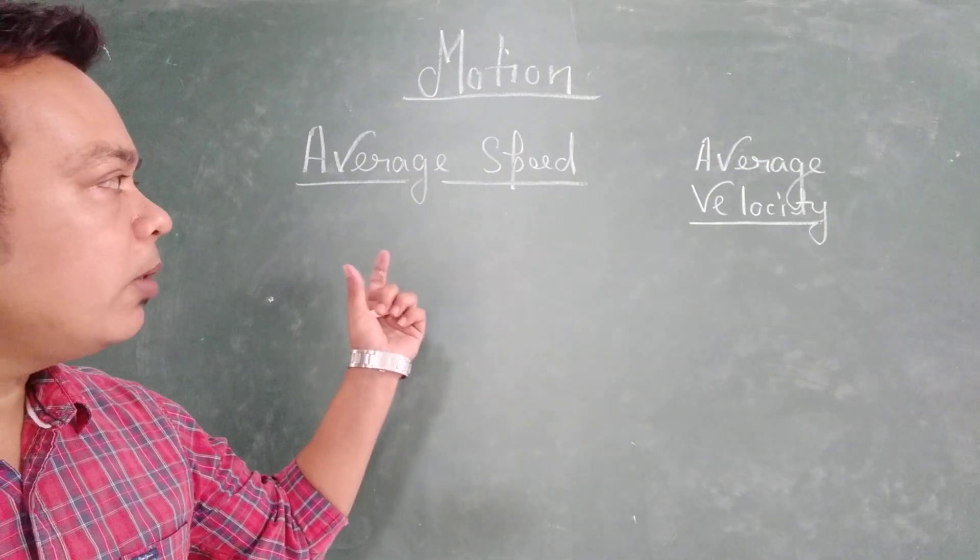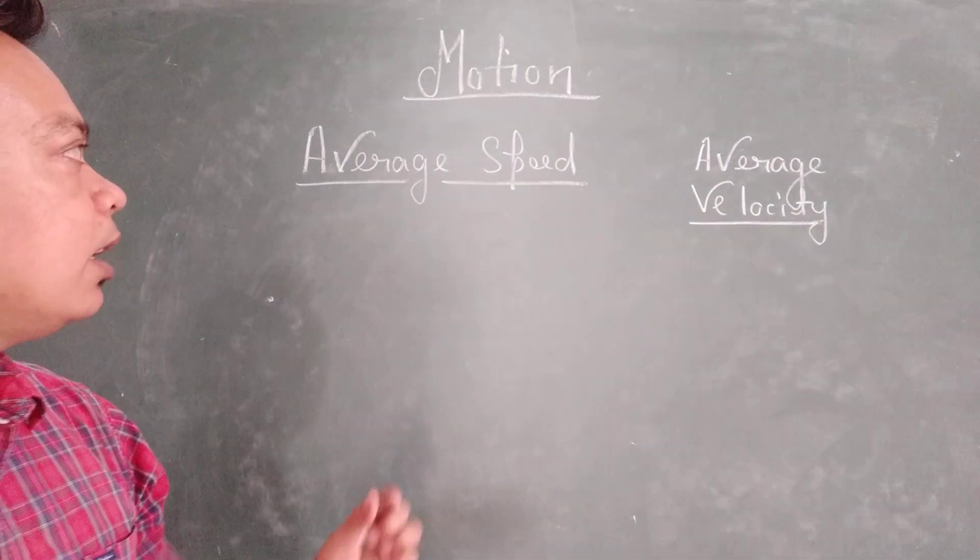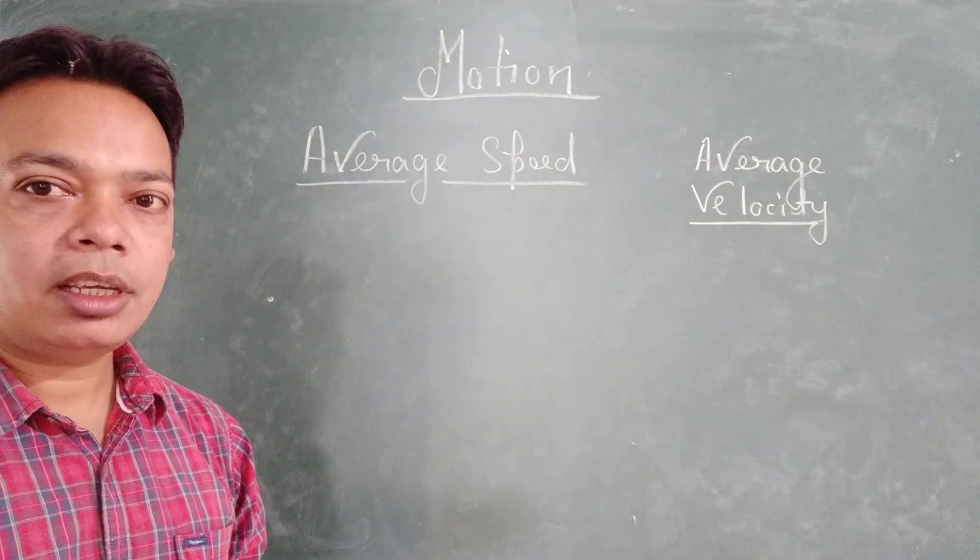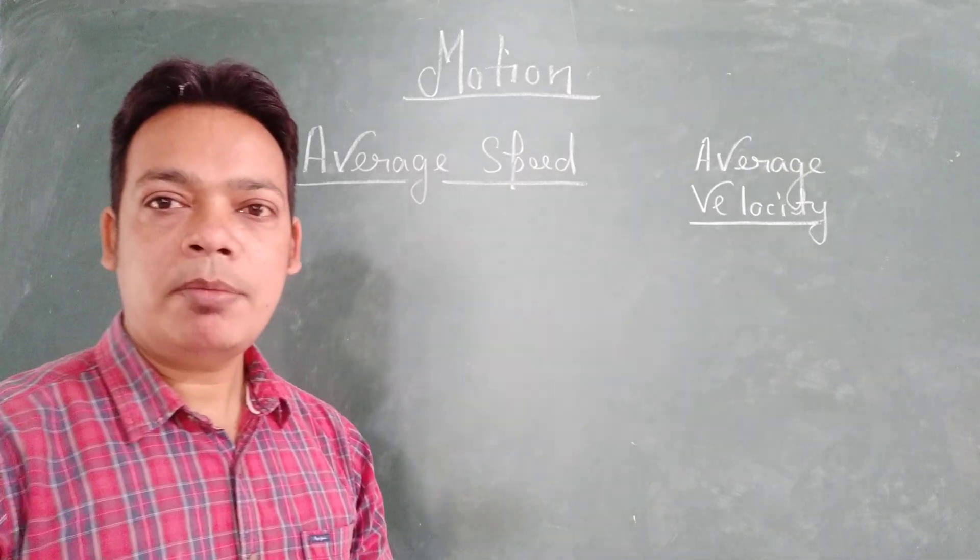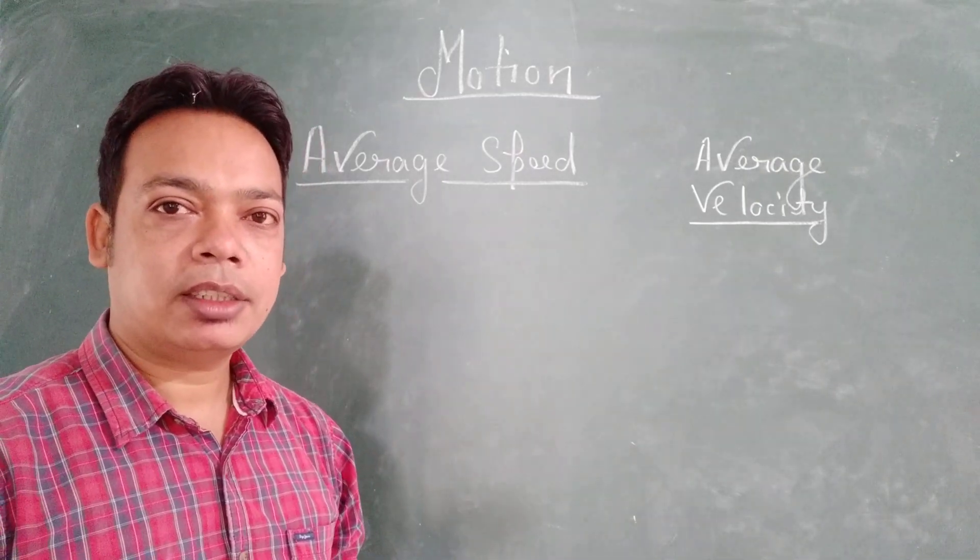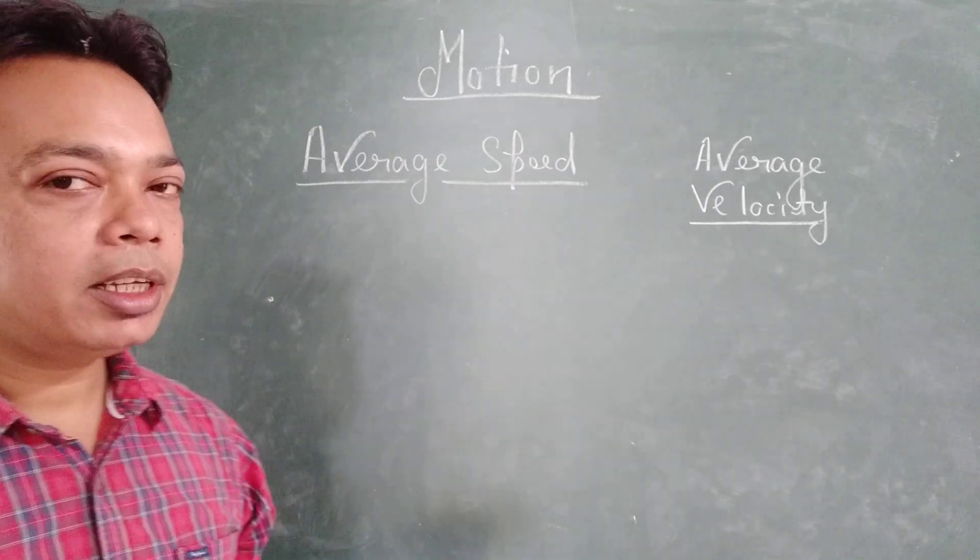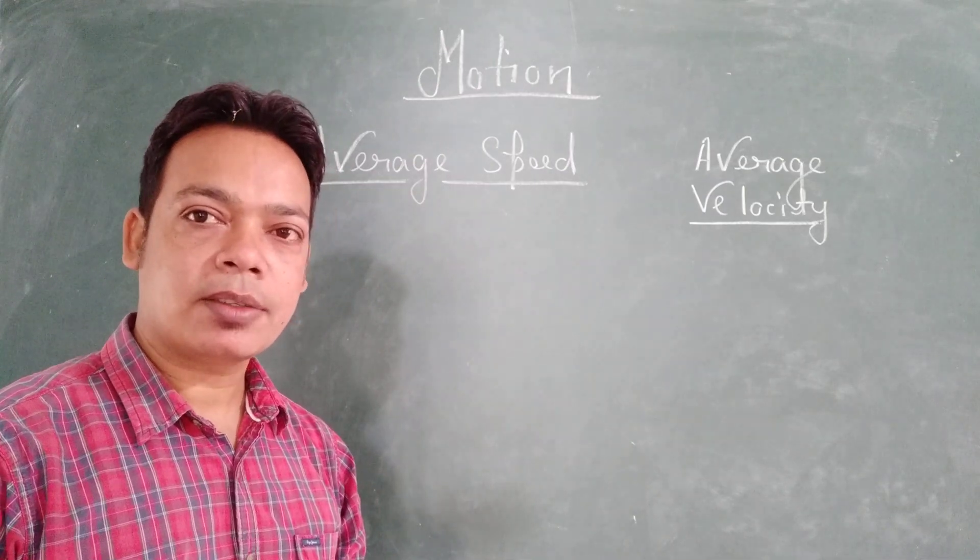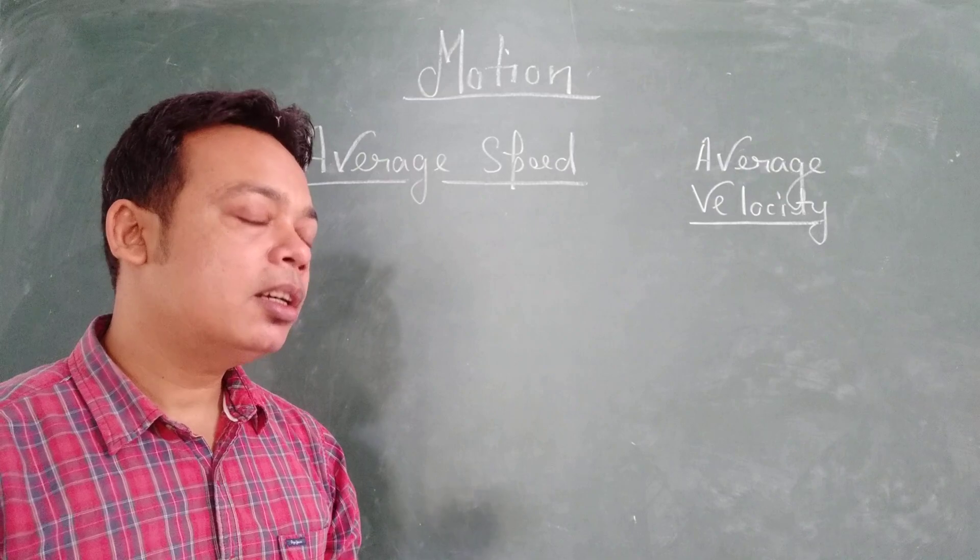There is quite a difference between average speed and average velocity. Speed is a scalar quantity while velocity is a vector quantity. Speed has only magnitude and no sense of direction, that is why speed is a scalar quantity, while velocity has both magnitude as well as sense of direction. That is why we can say that velocity is a vector quantity.